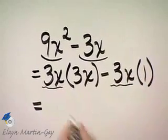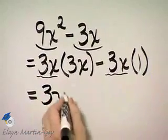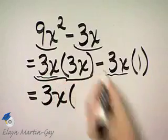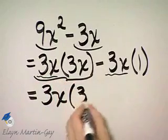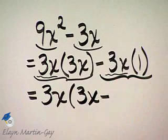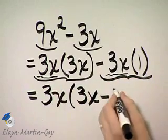So we're factoring out the common factor of 3x. When we factor it from the first term, we have 3x left. Minus, when we factor it from the second term, we have 1 left.